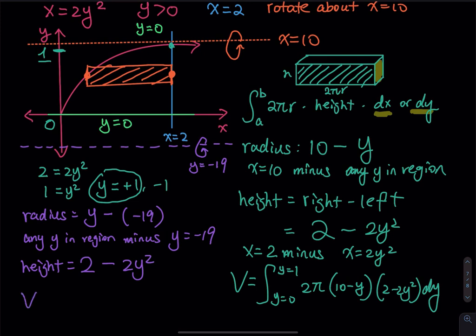And then your volume is equal to integral from 0 to 1, 2πr, y minus negative 19. And then times the height, 2 minus 2y squared and dy. All right. So that is the end of this problem.